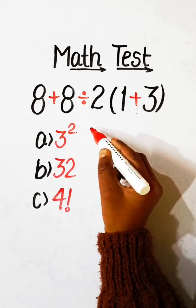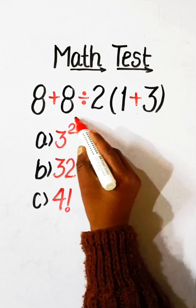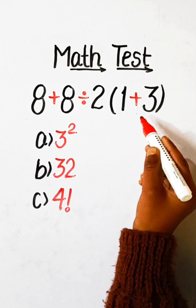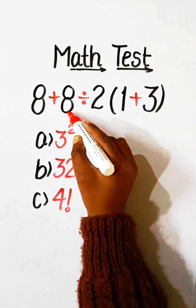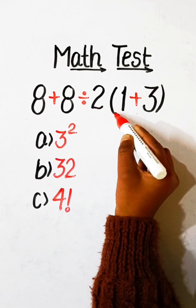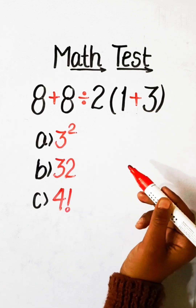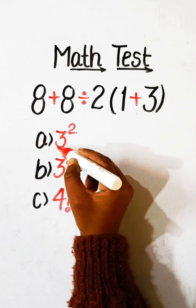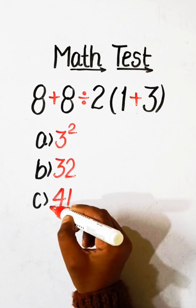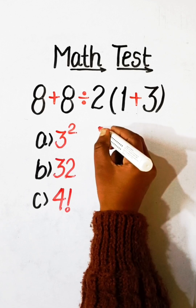Hello everyone, welcome back to my YouTube channel. In this video we will solve this simplification question: 8 plus 8 divided by 2 under bracket 1 plus 3 equals to what? Option A: 3 squared, Option B: 32, Option C: 4 factorial. So let's solve this.